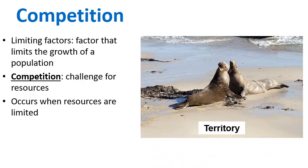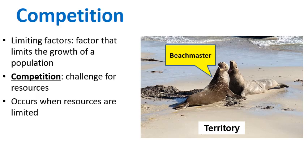A fun territorial example is the battle between male elephant seals. The elephant seal on the left might be the current champion, the beach master, who owns all the resources on the beach including females to mate with. Every now and then a young challenger steps up to fight for the right to claim that territory — a great example of competition for limited resources.